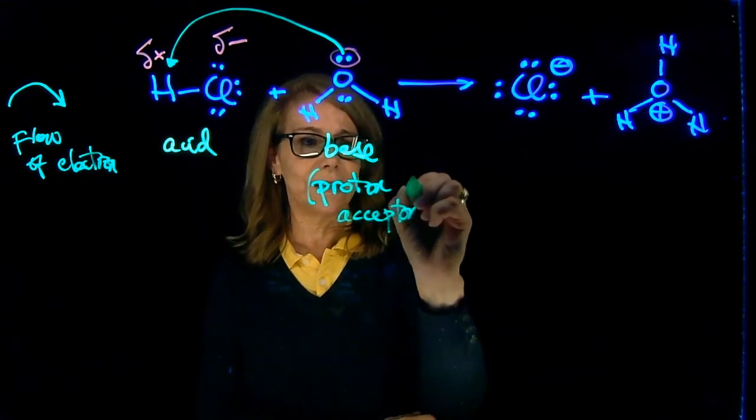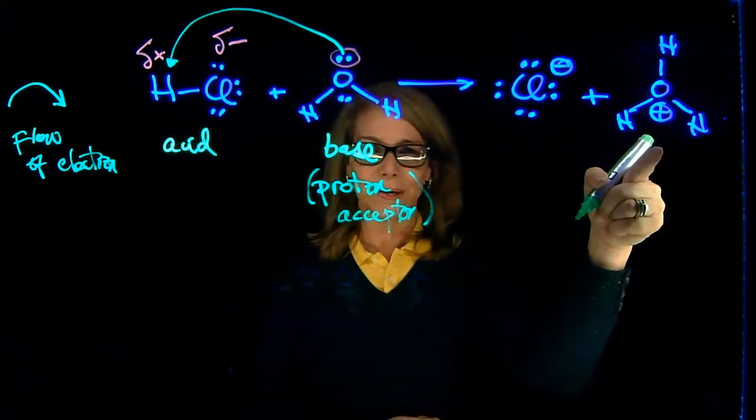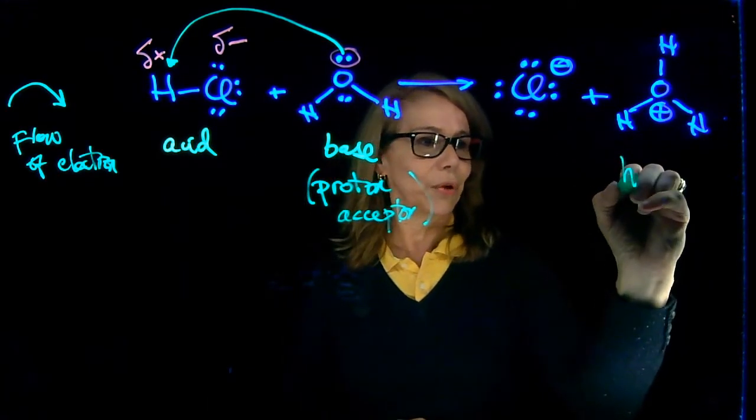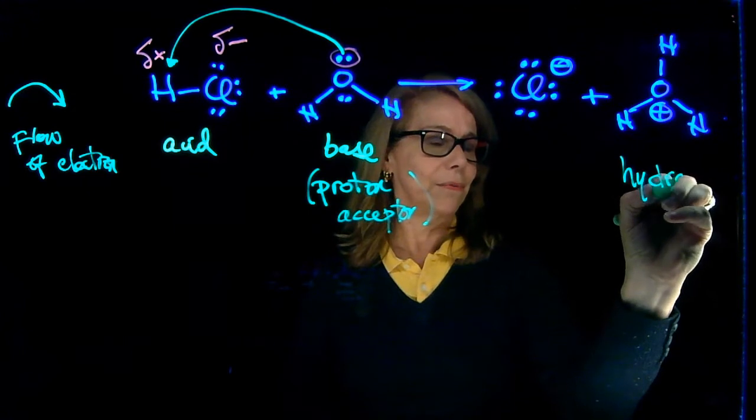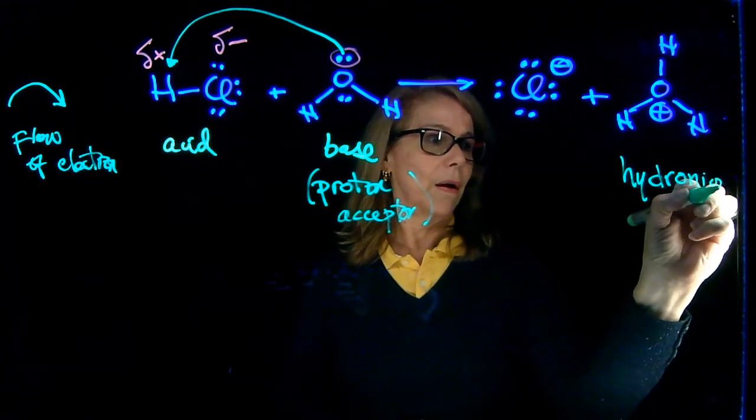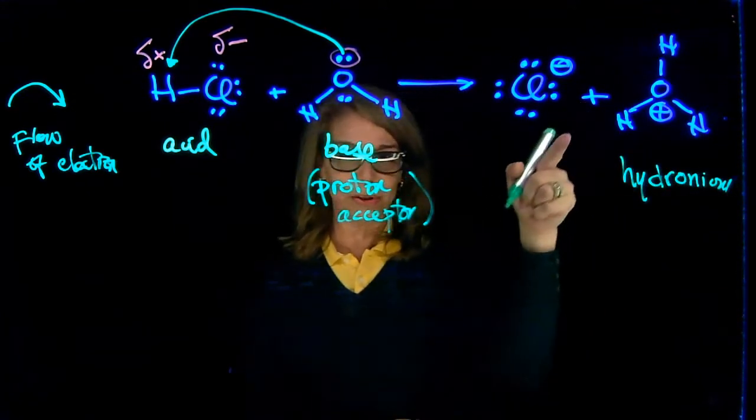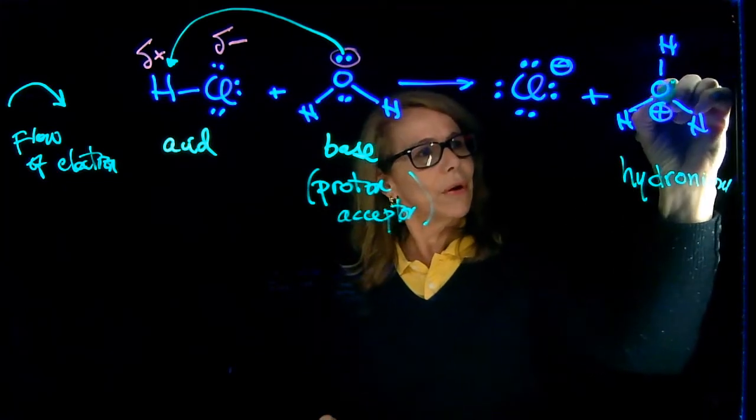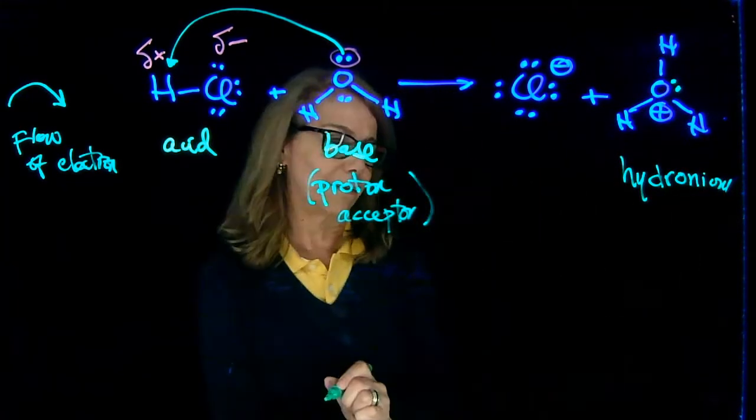So right here the base—remember the definition of Bronsted-Lowry—it is a proton acceptor. And here we see that it took the proton, it's over here, and this is hydronium ion. Remember our formal charges here. Now we only have one pair of electrons here.